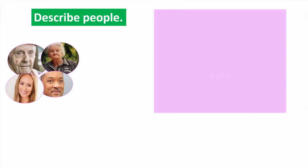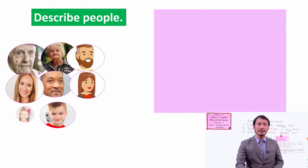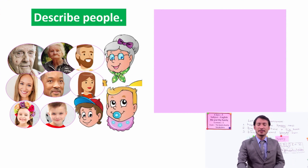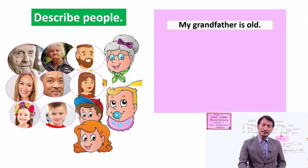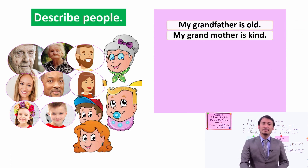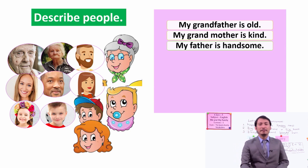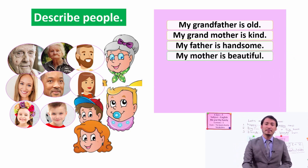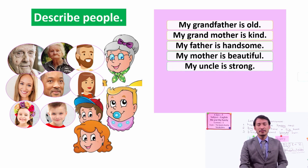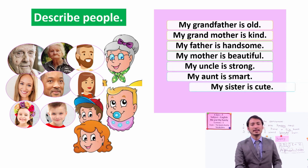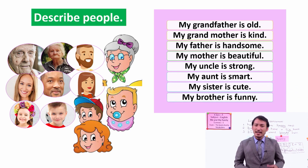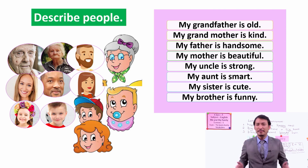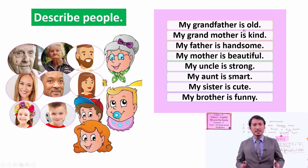Another exercise is describing people. You can describe all people with different quality words. You can say some tall, some short, some can be fat. I have some examples: my grandfather is old, my grandmother is kind, my father is handsome, my mother is beautiful, my uncle is strong, my aunt is smart, my sister is cute, and my brother is funny.